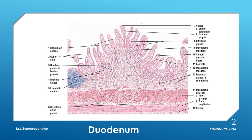That is the feature of mucosa — we are able to make out numerous villi. Now the striking feature of the submucosa in duodenum is the presence of glands. These glands present in the submucosa are called Brunner's glands, also known as duodenal glands. In the identification we have to write: submucosa with Brunner's glands.